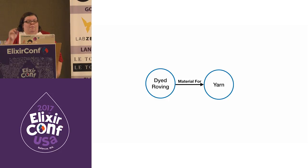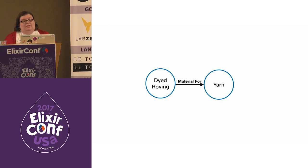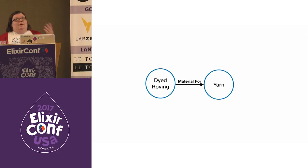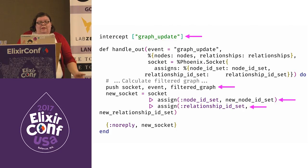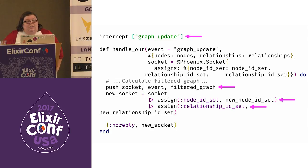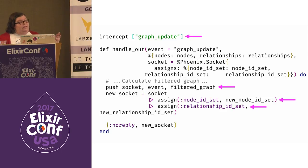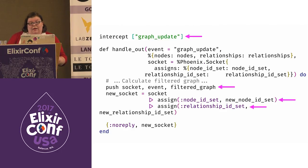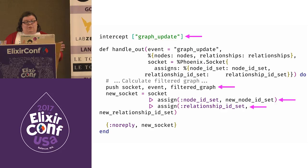When the user marks Christa's dyed roving as material for her yarn, this creates the relationship between dyed roving and finished yarn, and it's this relationship that expands the graph. To show only updates without sending the whole graph each time, we store the previously sent graph on the socket and compare differences. Every time a graph update event is broadcast, handle_out calculates the difference between the previously seen ID set and the new ID set. Nodes and relationships with new IDs are filtered and pushed out, and the full set of IDs is stored on the socket for future broadcasts.